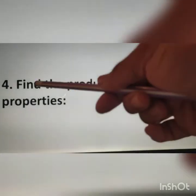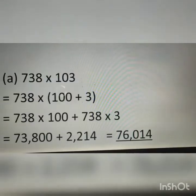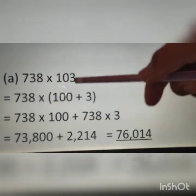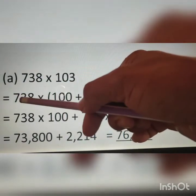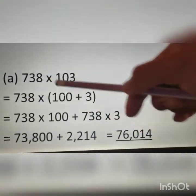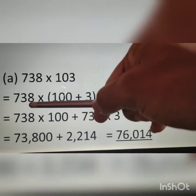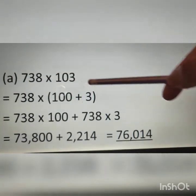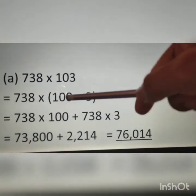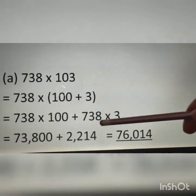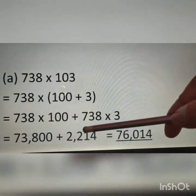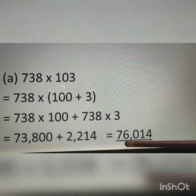In question 4, find the product using suitable properties. We use the properties of whole numbers to find the product. Part A: 738 multiplied by 103. We write 103 as 100 plus 3 to make the calculation easier. By the distributive property, A into B plus C equals A into B plus A into C. So we write 738 multiplied by 100 plus 738 multiplied by 3, giving 73,800 plus 2,214. Therefore, the answer is 76,014.